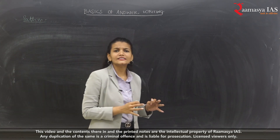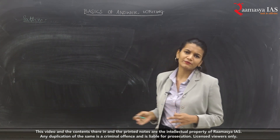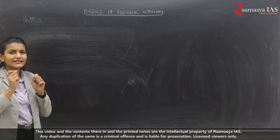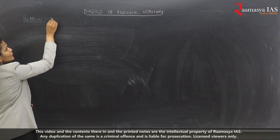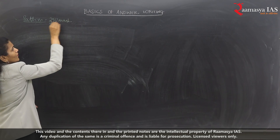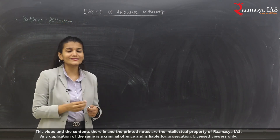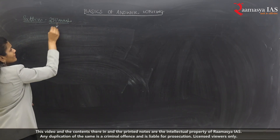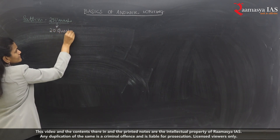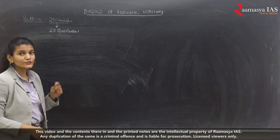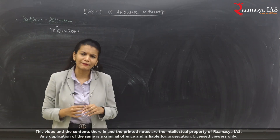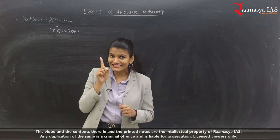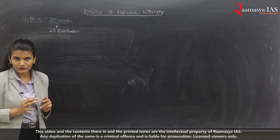Let's begin with the pattern of the questions. We will discuss General Studies Paper 1, Paper 2, Paper 3, and Paper 4. The total marks of a single paper — for General Studies 1 or 2 — is 250 marks. Generally speaking, we have around 20 questions in total for that 250-mark paper. So each question is either 10 or 15 marks.